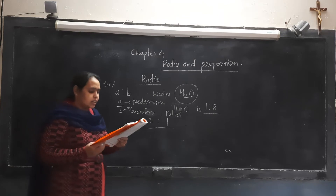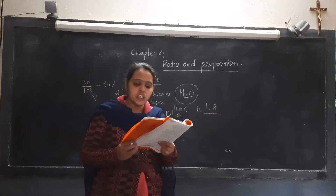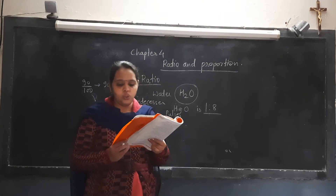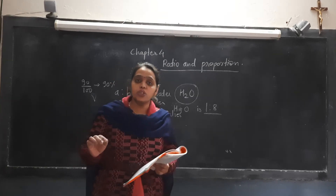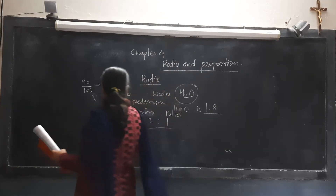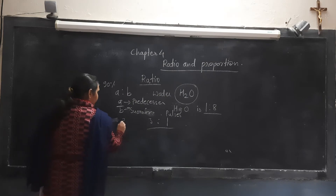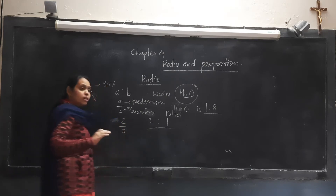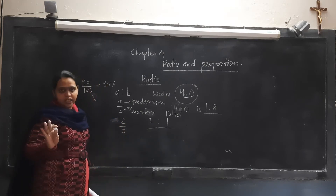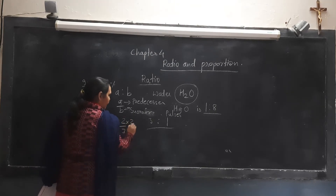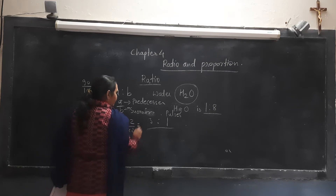The third property: the ratio remains unchanged if all its terms are multiplied or divided by a non-zero number. For example, if we take the ratio 2 upon 3 and multiply both sides by 2, we get 4 upon 6.